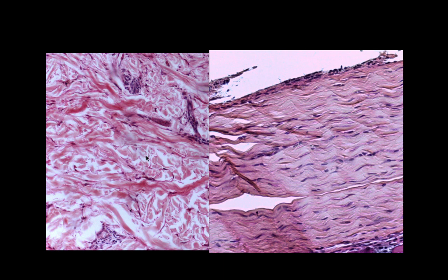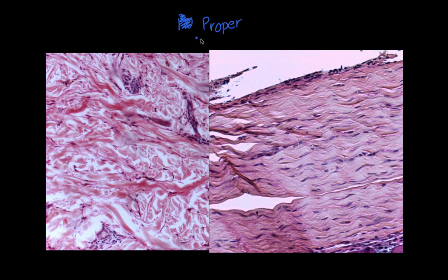I wanted to compare dense irregular to dense regular connective tissue, just to hammer the point home about collagen. These are both connective tissue proper — specifically dense connective tissue proper. We have dense irregular on one side and dense regular on the other. The collagen fibers on the irregular side are going every which way, versus the regular side where the collagen fibers are going straight across.